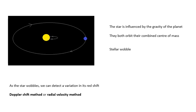Now you can actually measure that wobble, it's called astrometry, but that's not one of the methods we need to know. The one that we need to know is the fact that as the star wobbles, there will be a variation in its red shift. As it's moving away from us, the red shift will be a little bit bigger. As it's moving towards us, it'll be a little bit smaller. This is called the Doppler shift method or the radial velocity method. So as the star wobbles because of the exoplanet, there is a variation in its red shift.